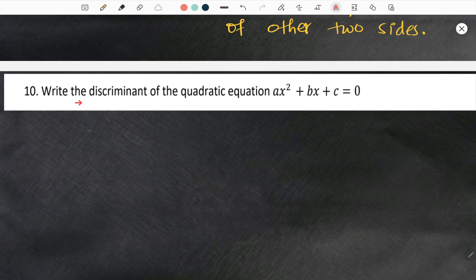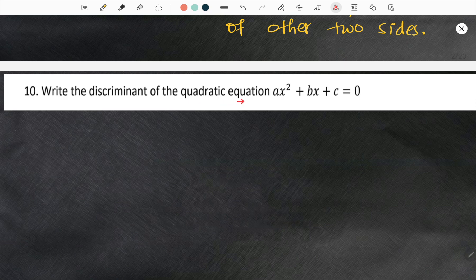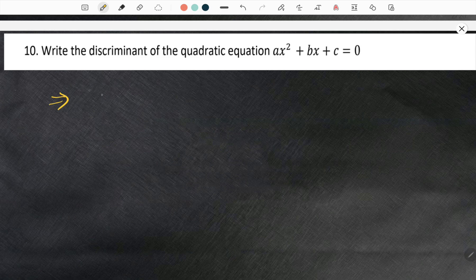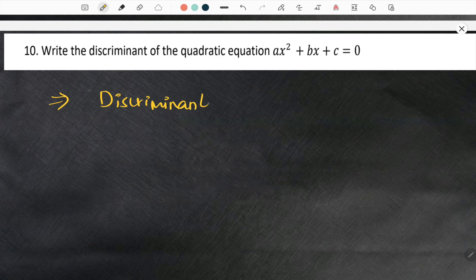Moving forward to the tenth question. Write the discriminant of the quadratic equation AX square plus BX plus C equal to 0. So what is the value of this discriminant? Discriminant is equal to B square minus 4AC. So this is the value of discriminant. Quite a simple question.